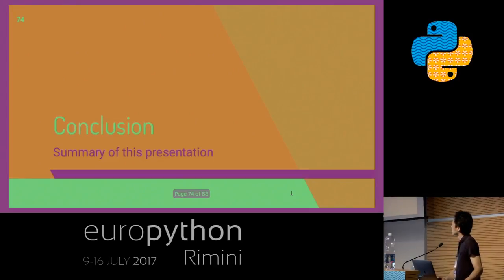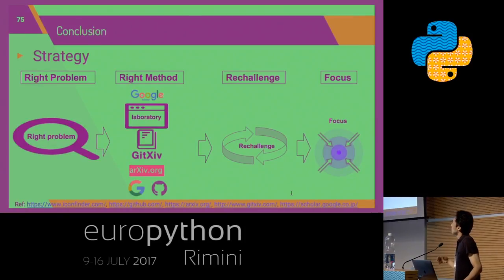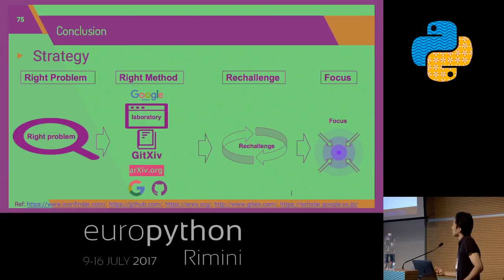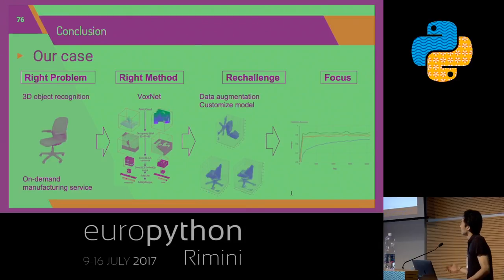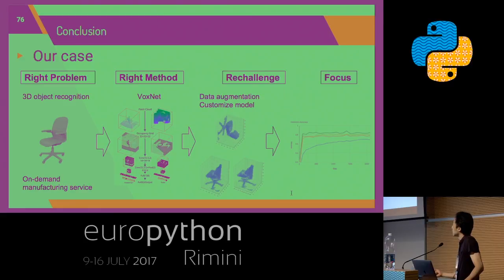Conclusion. In the first part, my strategy was: find the right problem, find the right method, re-challenge, and focus. In my specific case: the right problem was 3D object recognition, the right method was choosing BoxNet, re-challenging involved data augmentation and a customized model, and focus meant improving validation accuracy.